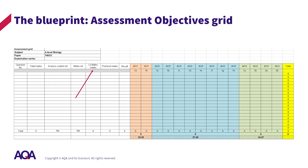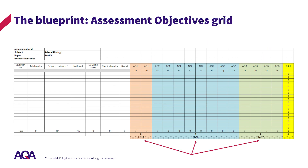There are some key features of the assessment objective grid. Each question part must have a specification reference. This allows us to track specification coverage over time and to ensure that each question is firmly rooted in the specification content. Maths marks can be allocated to question parts — remember this needs to be 10% of the total marks available. Practical marks are also added to the grid and need to be 15% of the total marks available. We then have each of the assessment objectives AO1, AO2 and AO3 and their subdivisions. As marks are entered they are totalled up at the bottom and these need to fall within the mark ranges stated for each assessment objective.